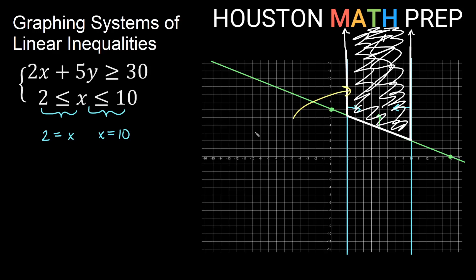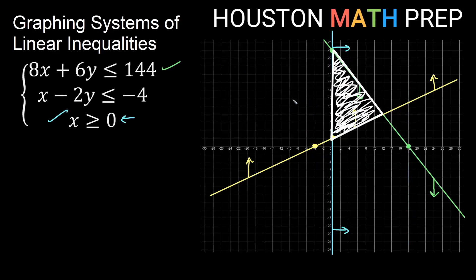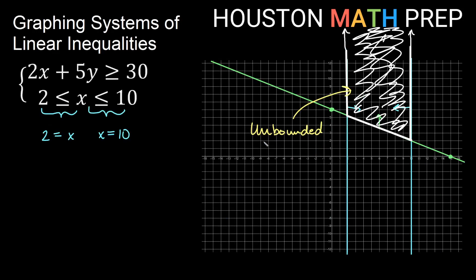This type of region is called an unbounded region — it goes on without end in some direction. In contrast, something like our last example was a bounded region, fenced on all sides by our graphs. Having a bounded versus unbounded region makes a big difference if you're working toward finding a maximum or minimum.